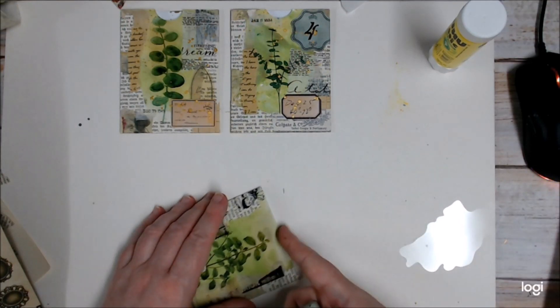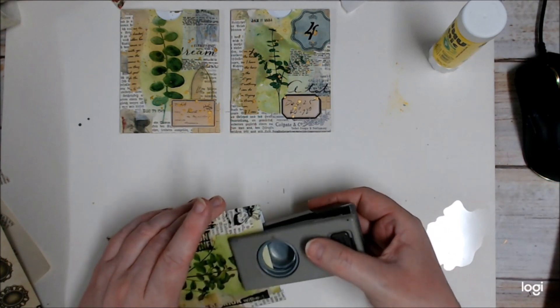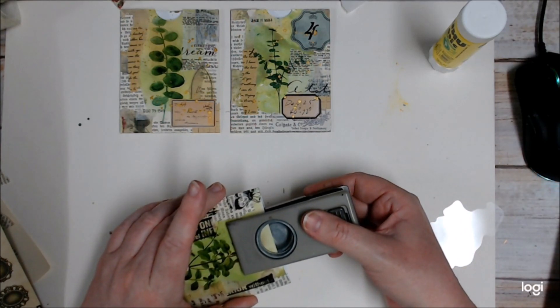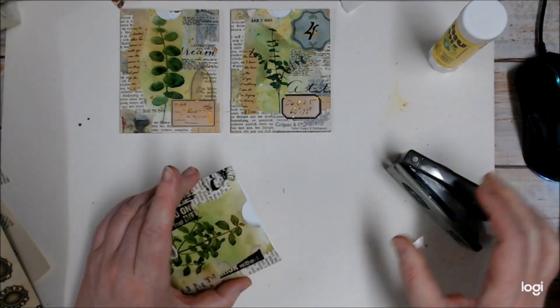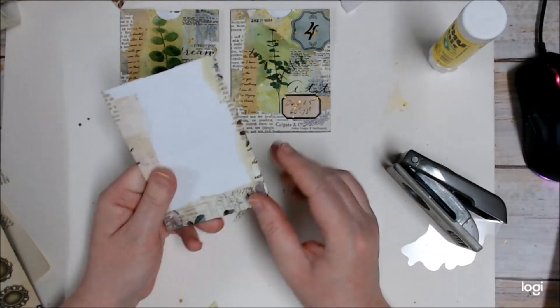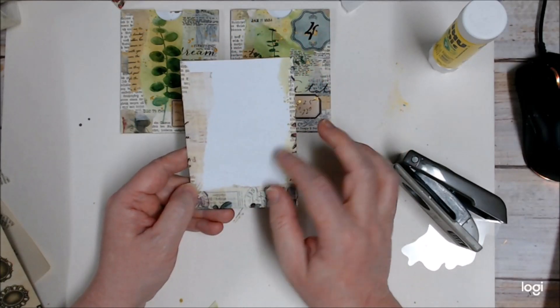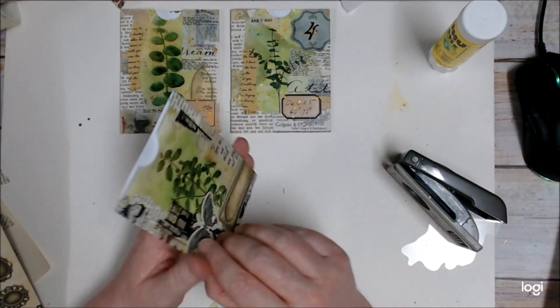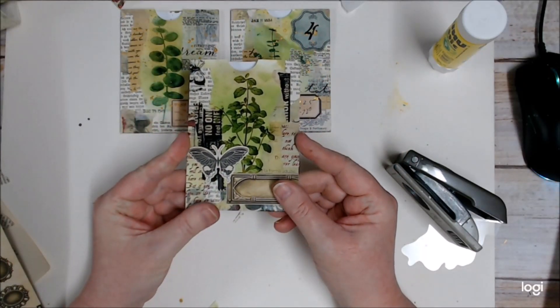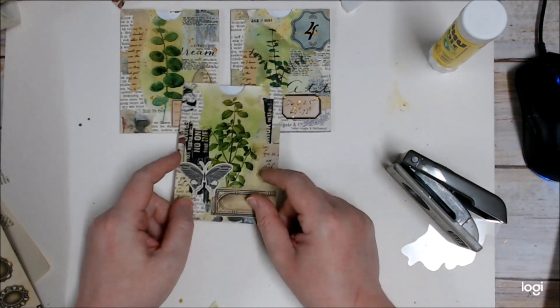And then to make a little thumb hole for the pocket, I'll just use a punch. Just eyeball it. And there we go, all done. So if you wanted to finish the back off, you could just layer another piece of coffee dyed paper or collage or something onto the back, and then you've got a floating pocket.